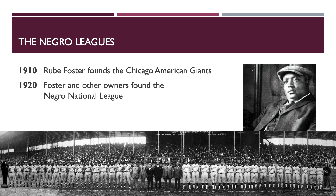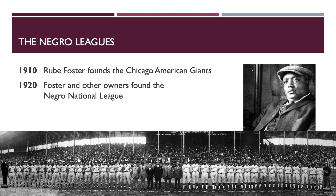Unfortunately, the Negro National League is not going to last very long — it's dealt two death blows. Rube Foster suffers a nervous breakdown and dies in 1930, and the Great Depression hits as well. By 1932 these initial leagues are gone, but they're eventually replaced by other leagues. Even in the midst of the Great Depression, Negro League Baseball starts to take off and thrive.